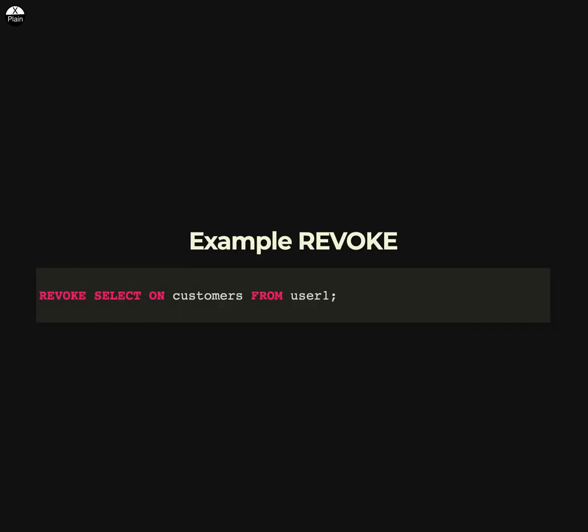Here is an example of revoking SELECT permission on a table from a user in SQL. This statement revokes the SELECT permission on the customers table from the user, user1.